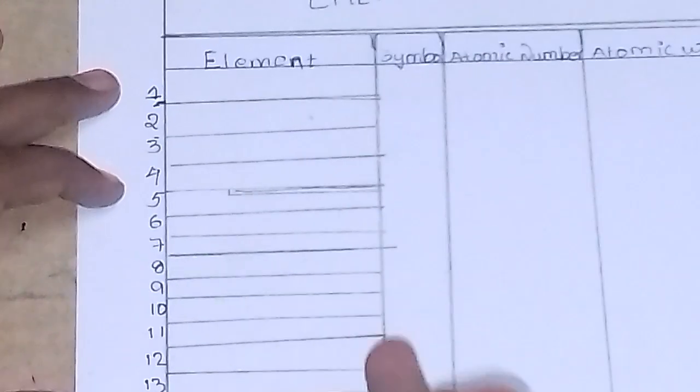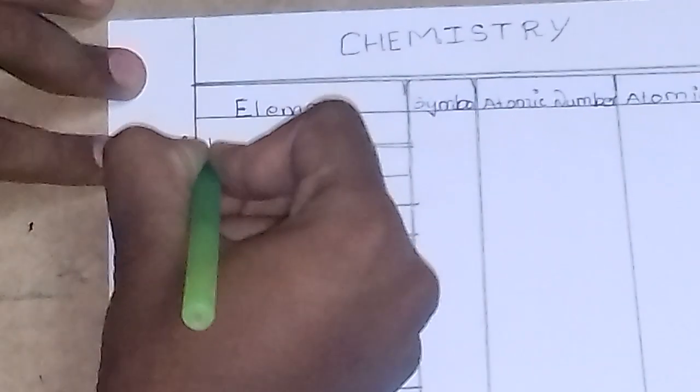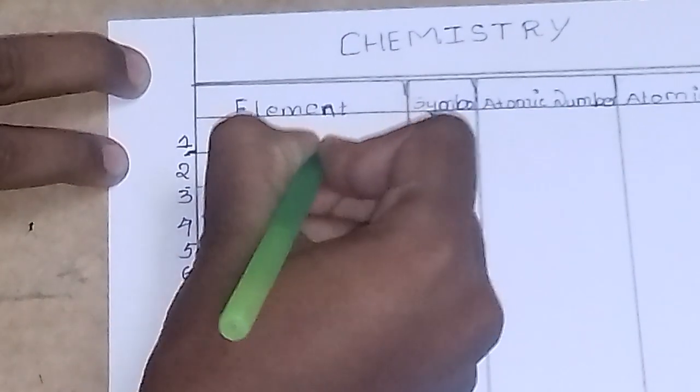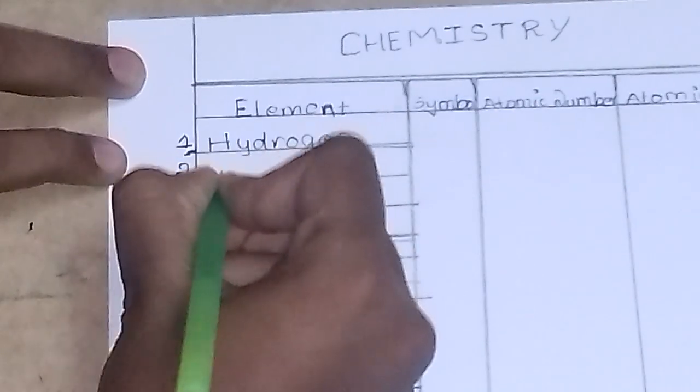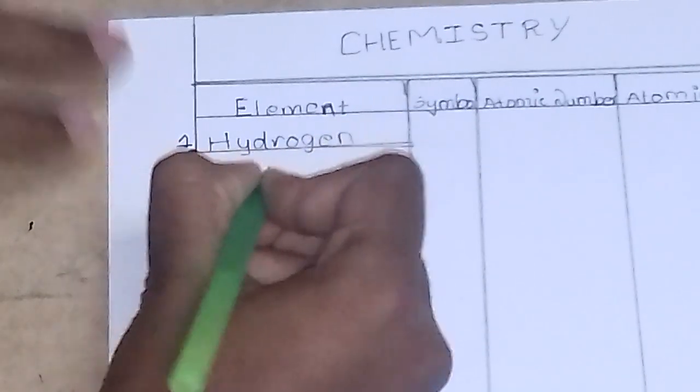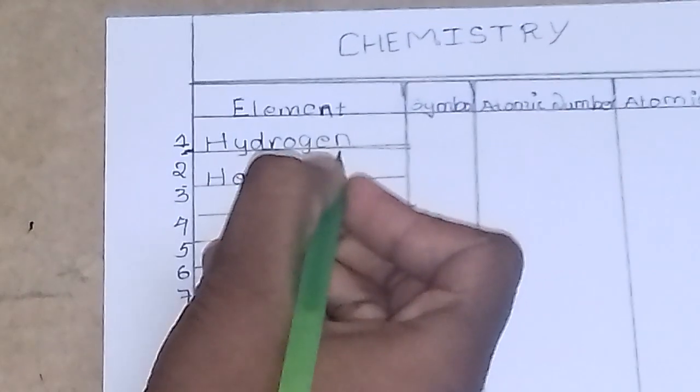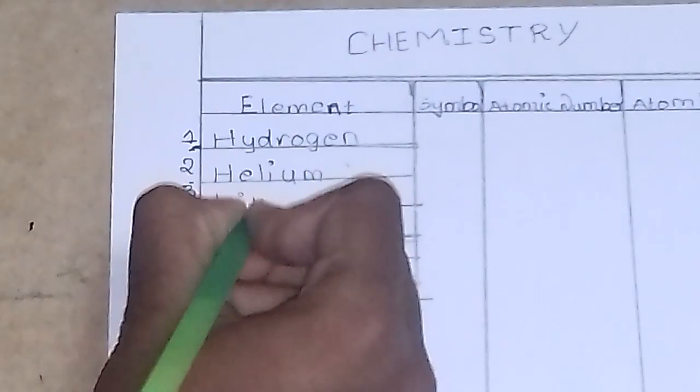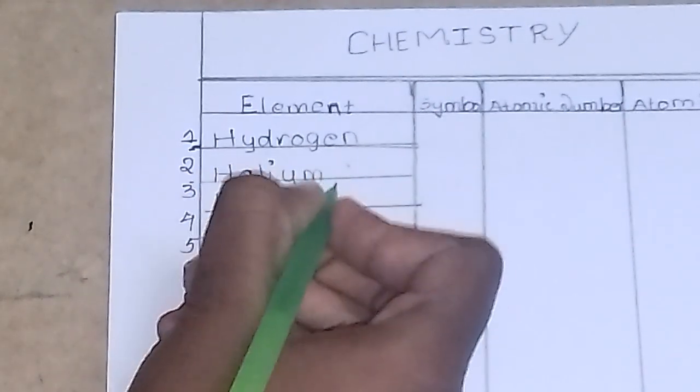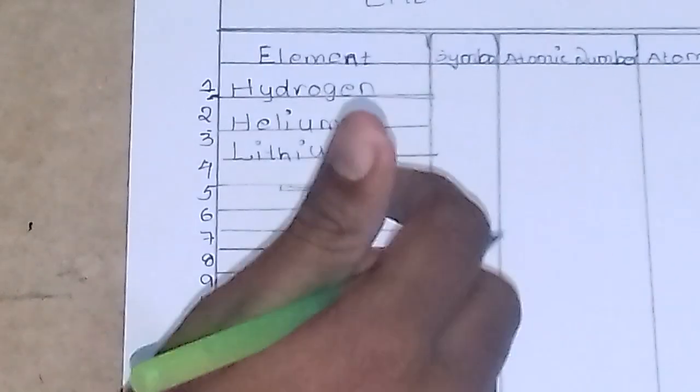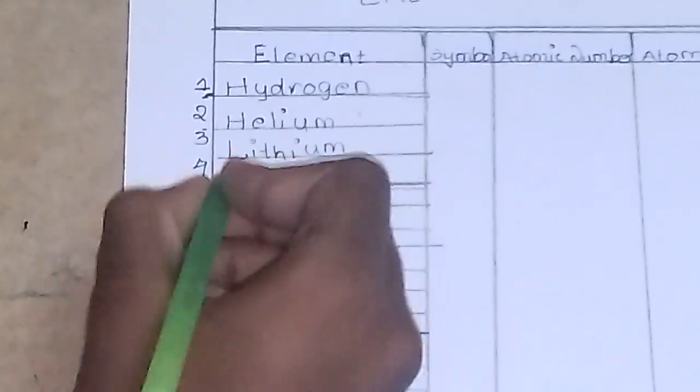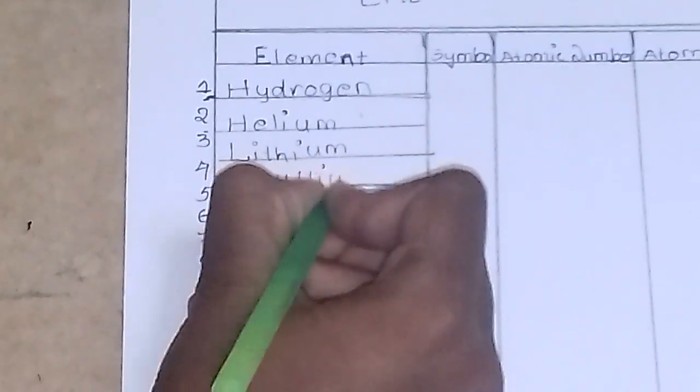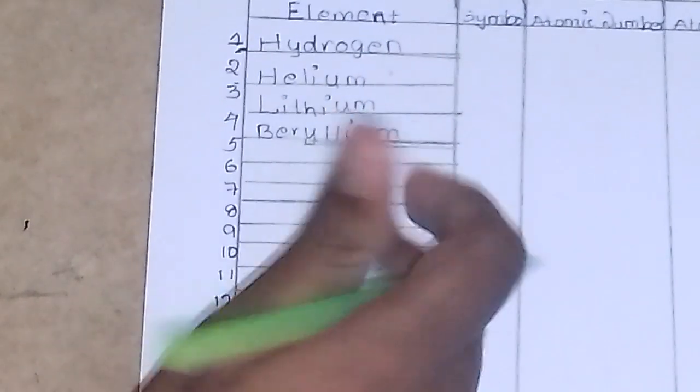The first element you know all, hydrogen. The second one is helium. The third element is lithium. The fourth one is beryllium. The fifth one is boron.